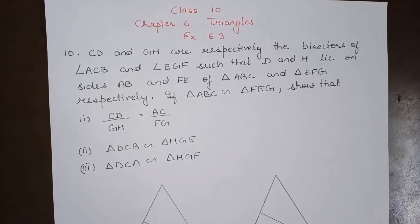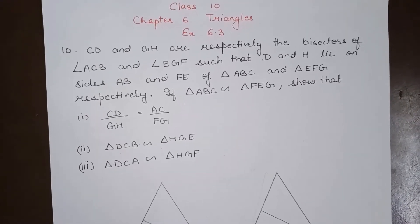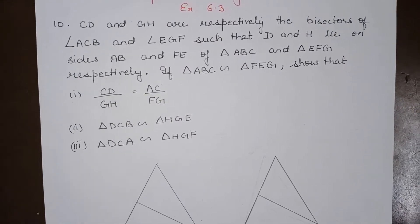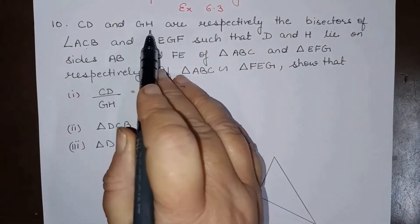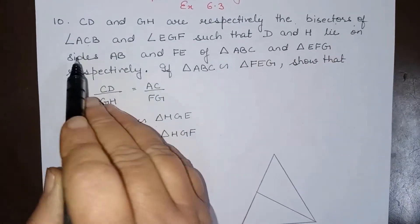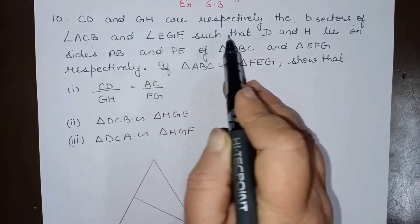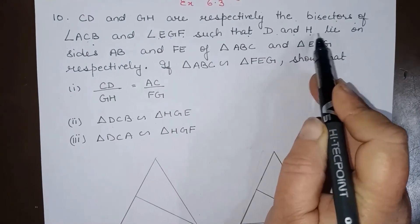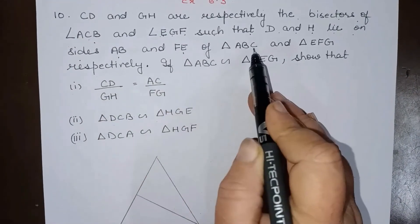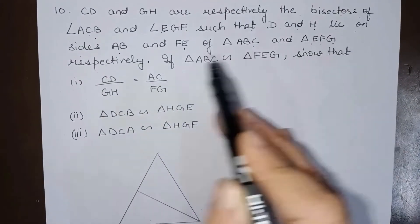Hello everyone. Today we will do Class 10th Chapter 6 Triangles, Exercise 6.3 Question 10. CD and GH are respectively the bisectors of angle ACB and angle EGF, such that D and H lie on the sides AB and FE of triangle ABC and triangle EFG respectively.